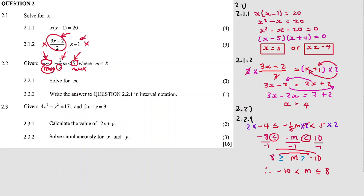Therefore the solution is minus 10 less than m less than or equal to 8. We need to arrange with the smallest number first — minimum to maximum. Question 2.2.2 asks to write the answer to 2.2.1 in interval notation.